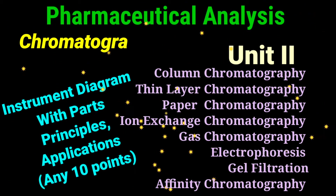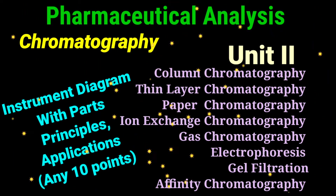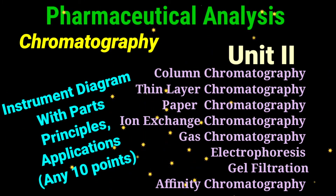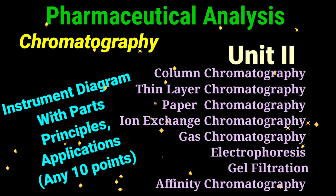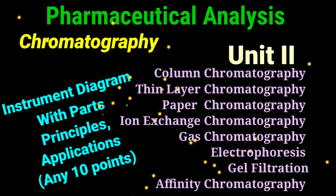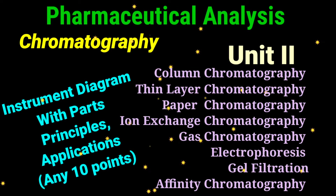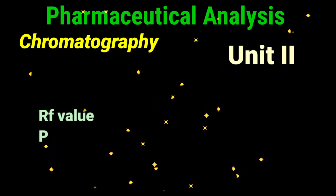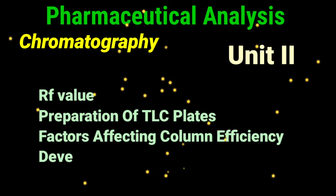In the second unit, questions will cover instrumentation diagrams, parts, and short principles, along with any 10 applications for the following: column chromatography, thin layer chromatography, paper chromatography, ion exchange chromatography, gas chromatography, electrophoresis, gel filtration, and affinity chromatography. Short explanations are essential. Specific subtopics include Rf value, preparation of TLC plates, and factors affecting column efficiency.